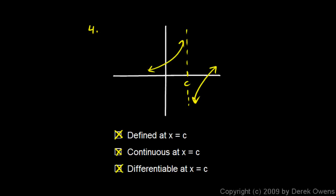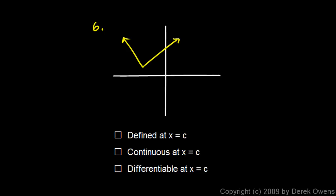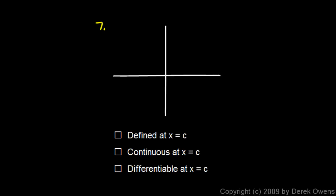Number five is another graph with a hole — but be careful, point C is over here away from the hole. The function is defined at C, it's continuous at C, and there's no cusp or anything unusual going on there, so it's differentiable at point C. Graph six looks like some kind of absolute value function, and at point C it is defined and continuous, but it is not differentiable because it is not smooth at that point.